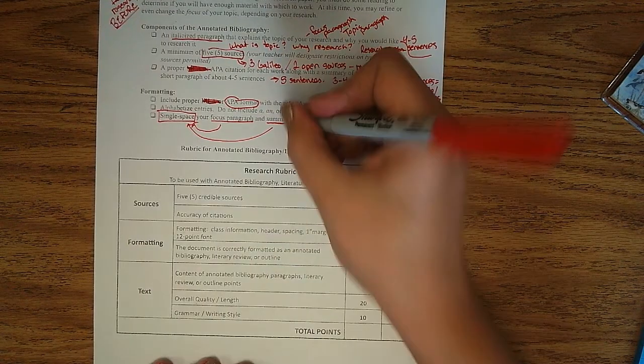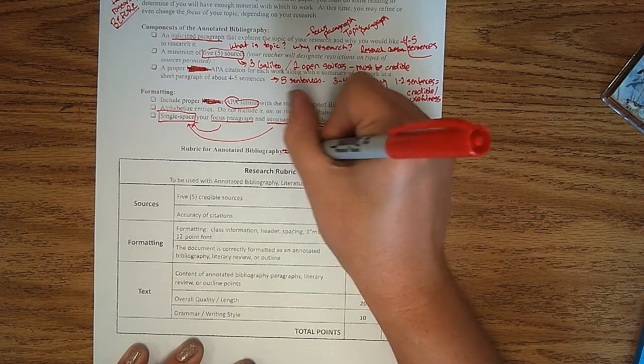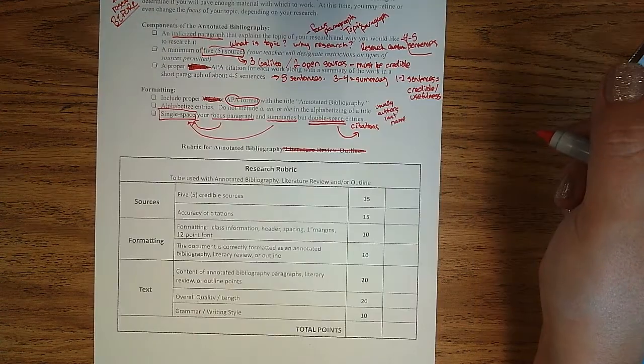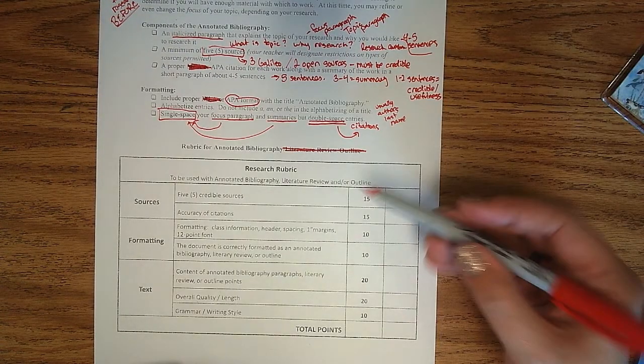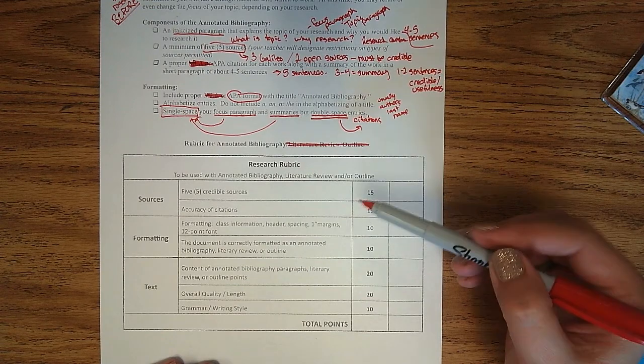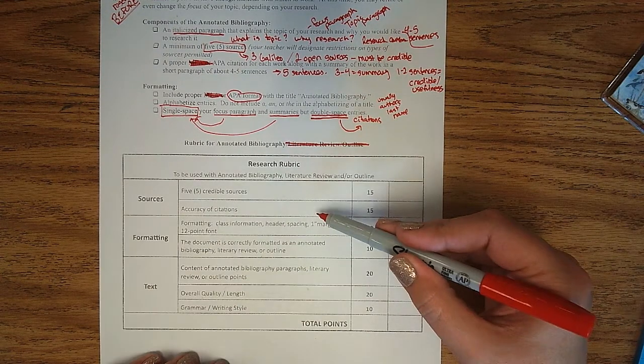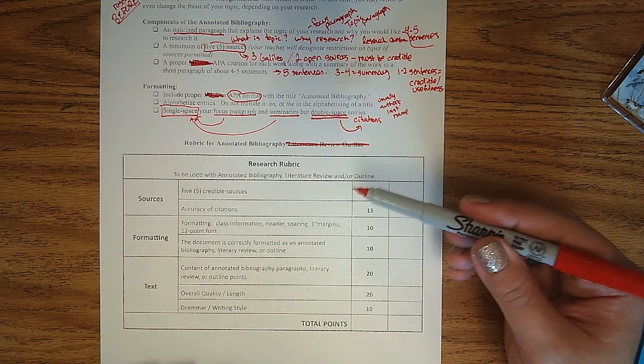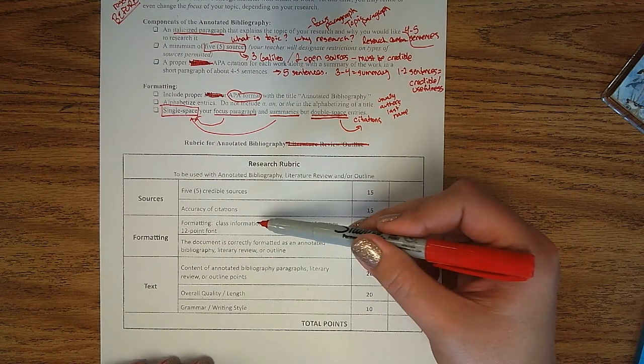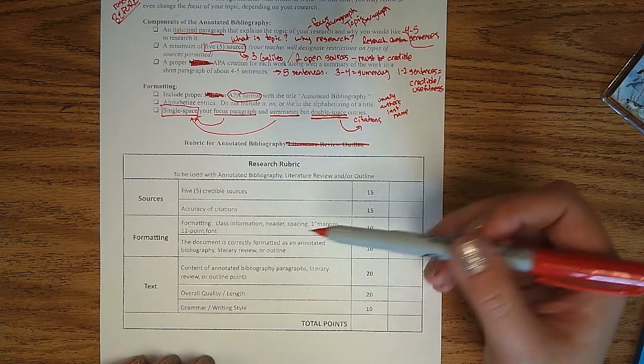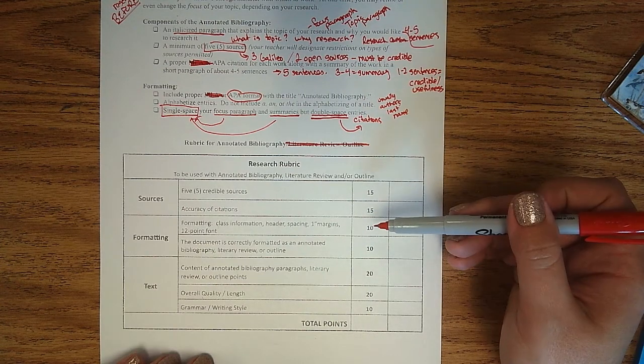That's probably the biggest mistake I see a lot of. All right, so let's look at this rubric real quick. We're going to do an annotated bib. Other people might be doing a literature review or an outline. We're doing an annotated bib. So again, five sources, 15 points. That means them, what, three points apiece? The citations, if you cite those sources accurately, you're looking at another three points apiece. Formatting, you want the class information, the header, the spacing, the margins, all that stuff. Ten points for getting that right.